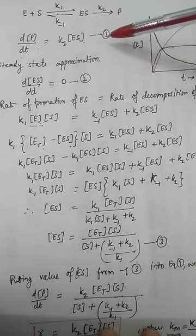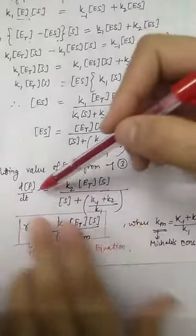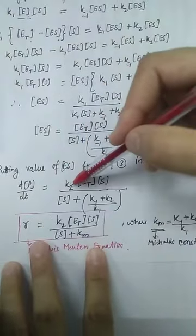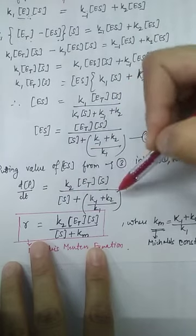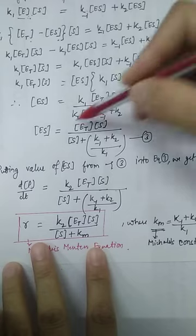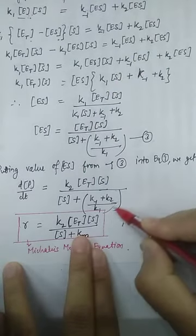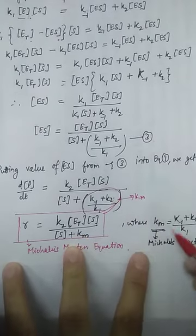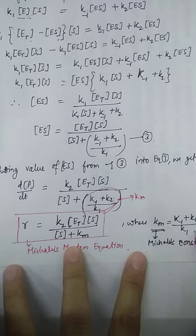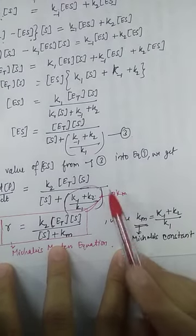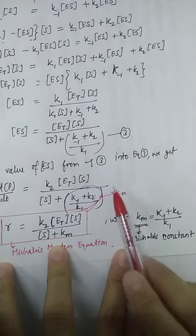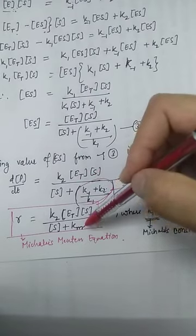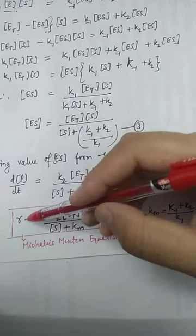On rearranging we get a third equation. Substituting the concentration of the enzyme-substrate complex from the third equation into the first equation gives us the rate of reaction R. The complete term in the denominator is constant, so instead we write KM, where KM equals (K_inverse plus K2) divided by K1. This is called the Michaelis constant, and in place of the three separate constants we now write KM.